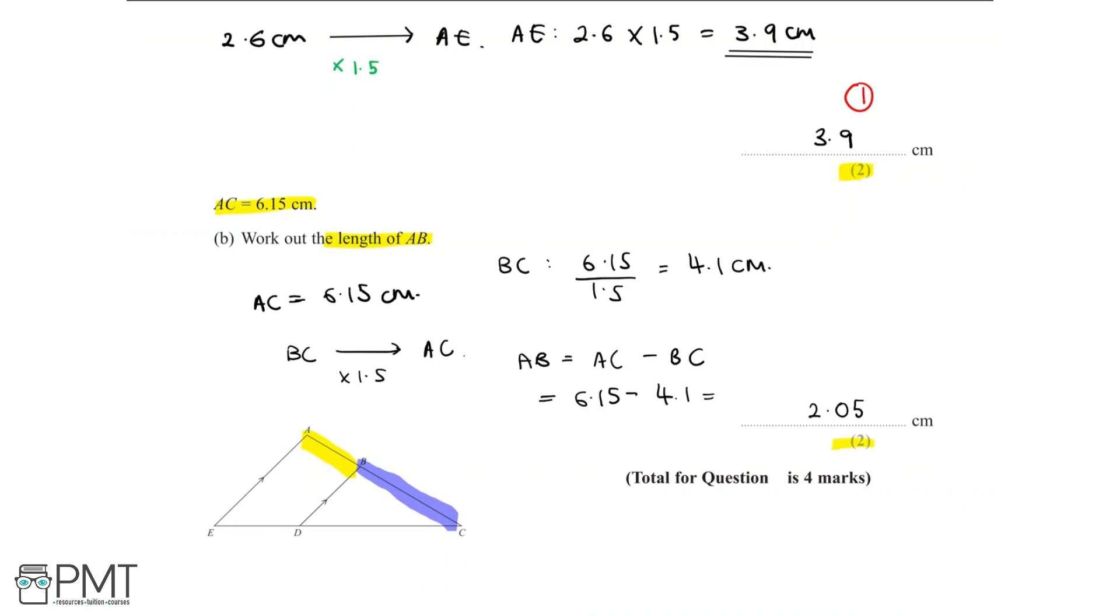So in order to get the two marks needed for part B, we need to have used the scale factor from part A in order to find the fact that length BC equals 4.1cm. And that second mark will be for finding the length AB by subtracting BC from AC in order to get a final answer of 2.05cm.